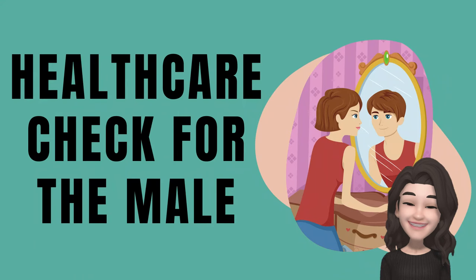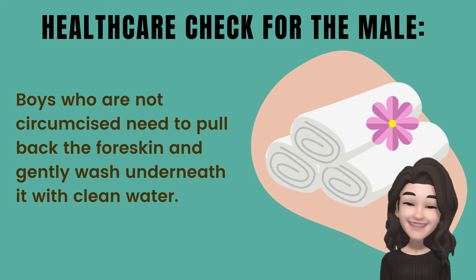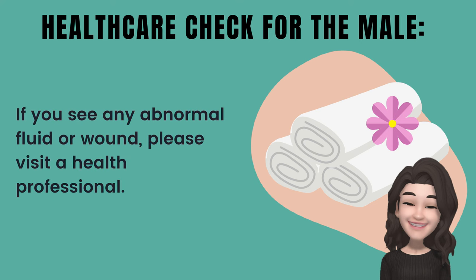Now let's proceed to healthcare check for the male. Boys, please listen. First, wash the external genitalia at least daily with soap and water as you wash the rest of the body. Second, boys who are not circumcised need to pull back the foreskin and gently wash underneath it with clean water. Third, be aware of any abnormal fluids coming from your penis — do not confuse this with the presence of normal fluids. Lastly, if you see any abnormal fluid or wound, please visit a health professional.